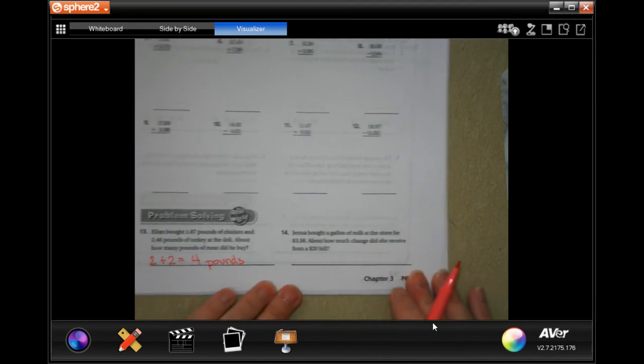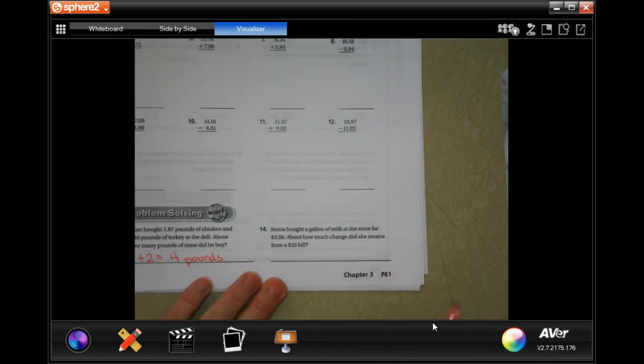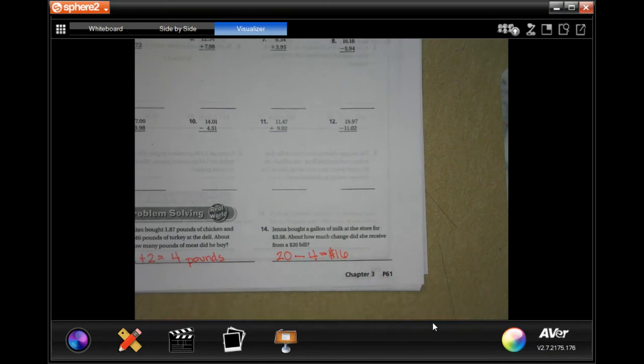So 4 pounds. Done. Then about a gallon of milk at the store is $3.58. About how much change should you receive from a $20 bill? Well, 20 minus and 3.58 is going to round to 4. Well, 20 minus 4 is 16 and don't forget we're putting that in dollars. So $20 minus $4 is $16.